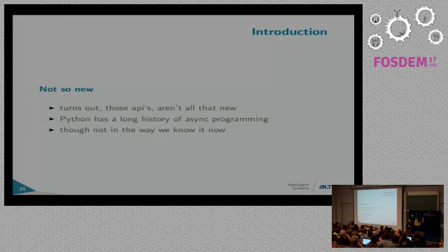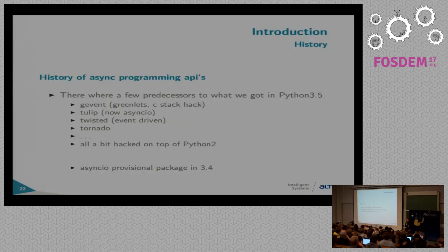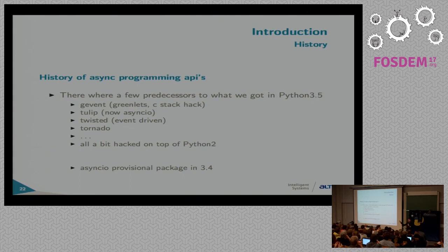To do that we need new APIs, because regular blocking APIs won't do. It turns out those APIs aren't that new at all — Python has a very rich history of async. You might know gevent, tulip (which became asyncio), and Twisted, still a big framework. There's an awesome talk about the death of Twisted on YouTube. Since asyncio is gaining momentum, Twisted will probably need to reposition themselves.